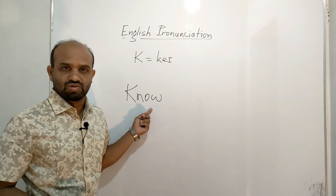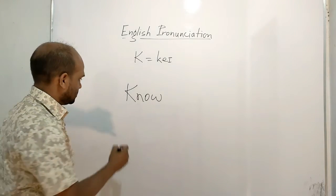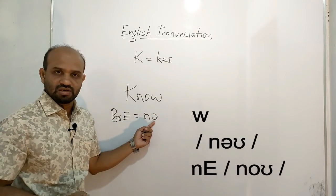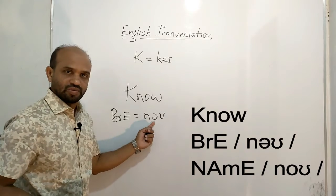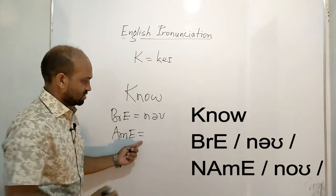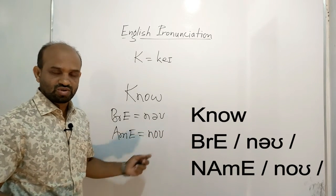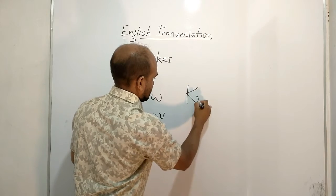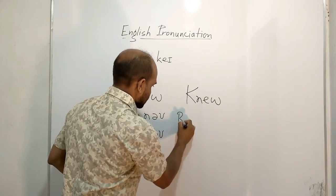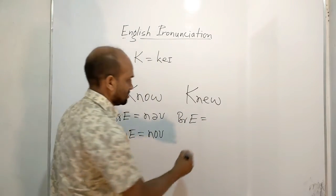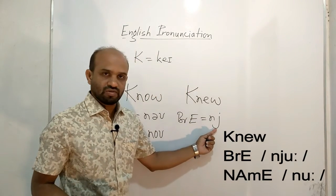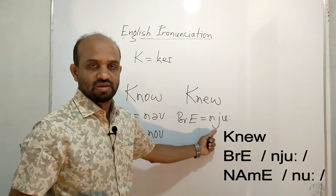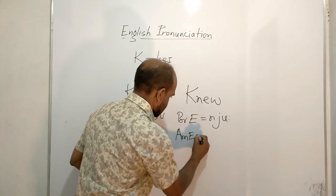Now we will see the pronunciation of this word according to British English and according to American English. According to British English, the sound uses a reversed-e symbol that makes the sound 'air', giving 'knew'. According to American English the sound is simply 'new'. We will also see the first form of this word — in British English it is 'knew', and in American English it is simply 'new'.